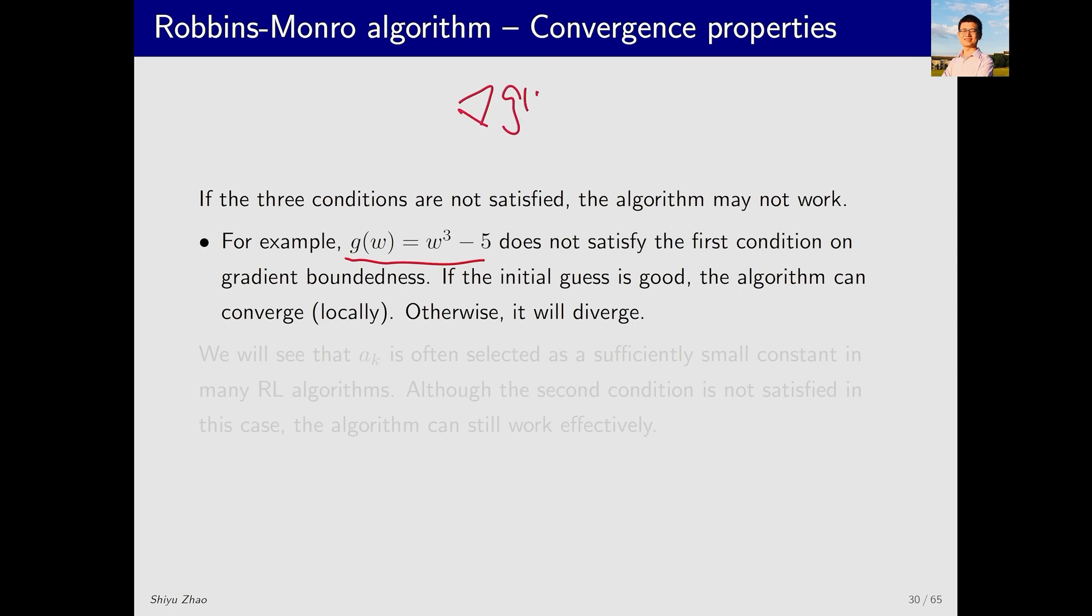Here, the gradient of g(w) is three times w squared. When w approaches infinity, this also approaches infinity, potentially causing the iteration to diverge.